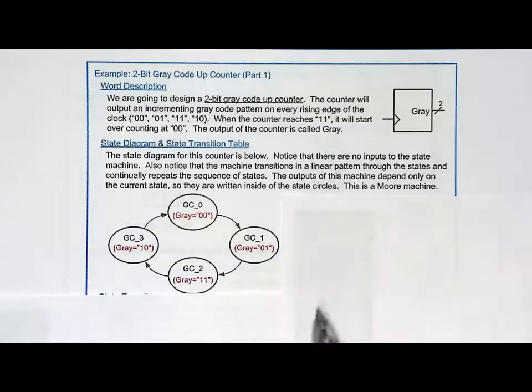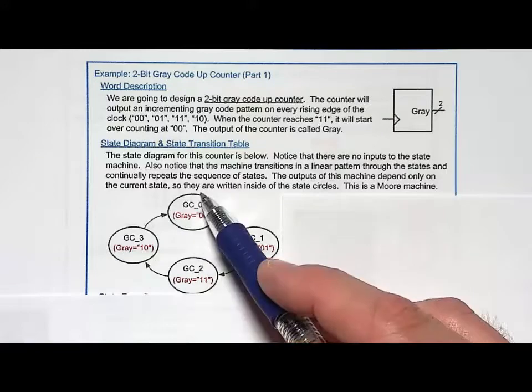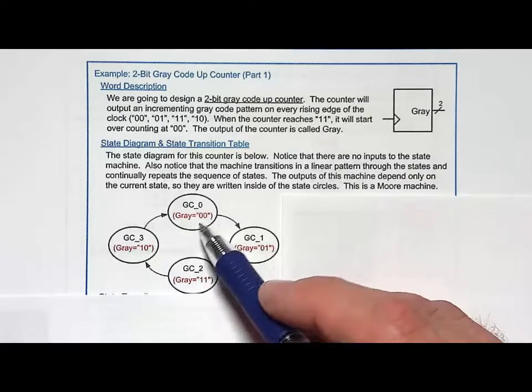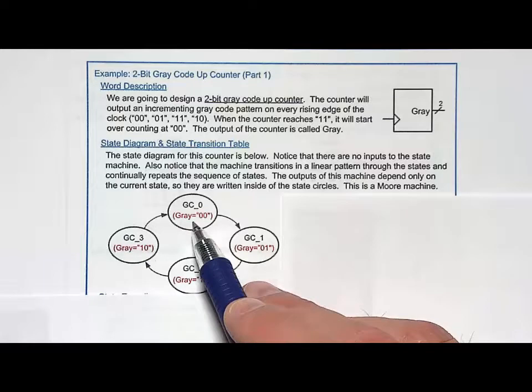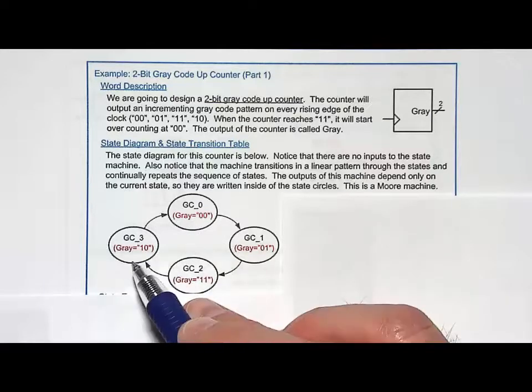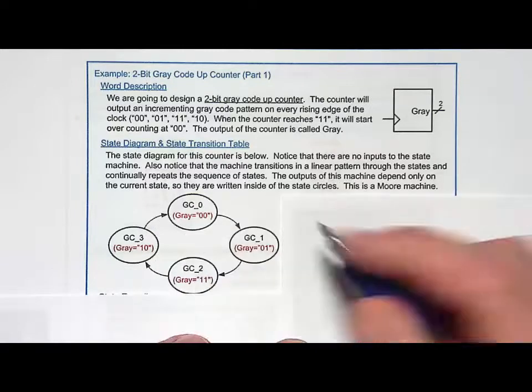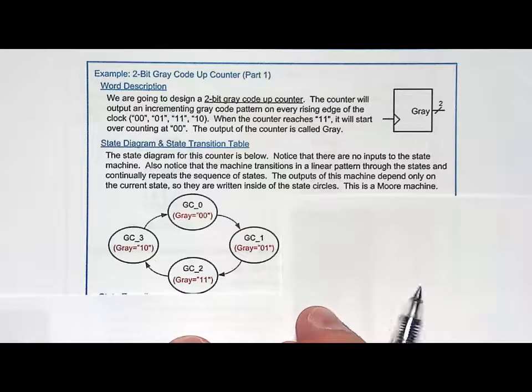We'll have each state produce an output. So we'll just have four states representing the four count values. And then within each state, we'll say gray is 00 here, gray is 01 here, gray is 11 here, gray is 10 here. And then we'll do our transitions. We'll just always go clockwise around there. So it's a pretty straightforward state diagram.